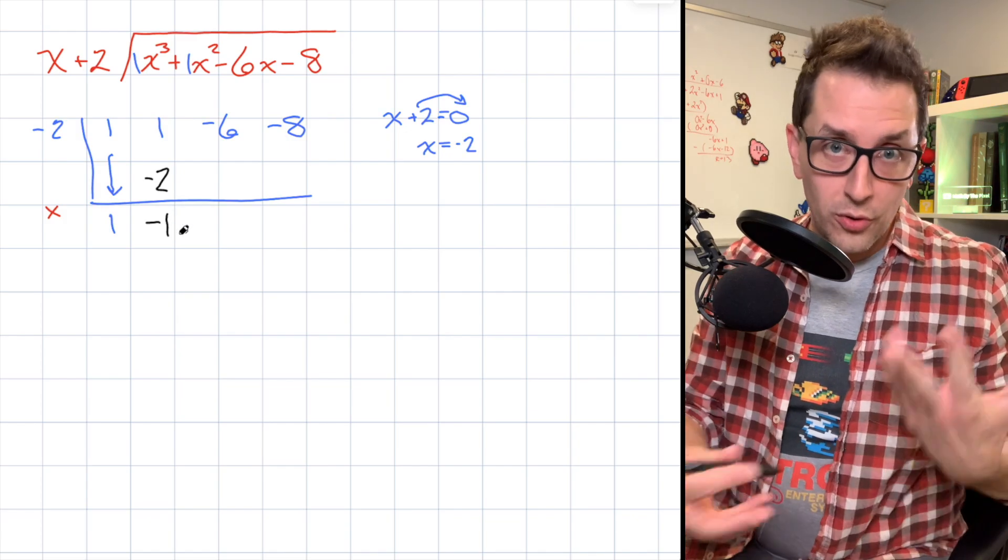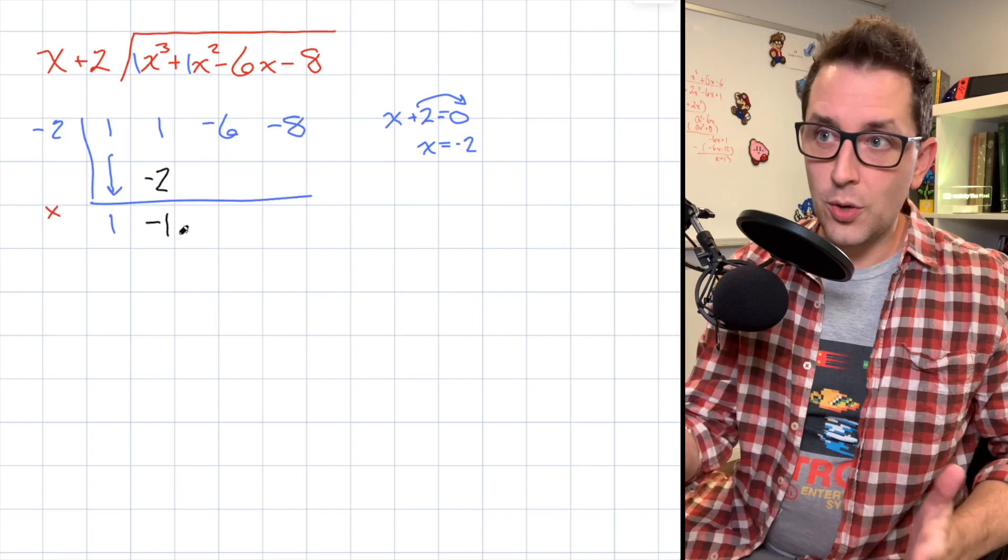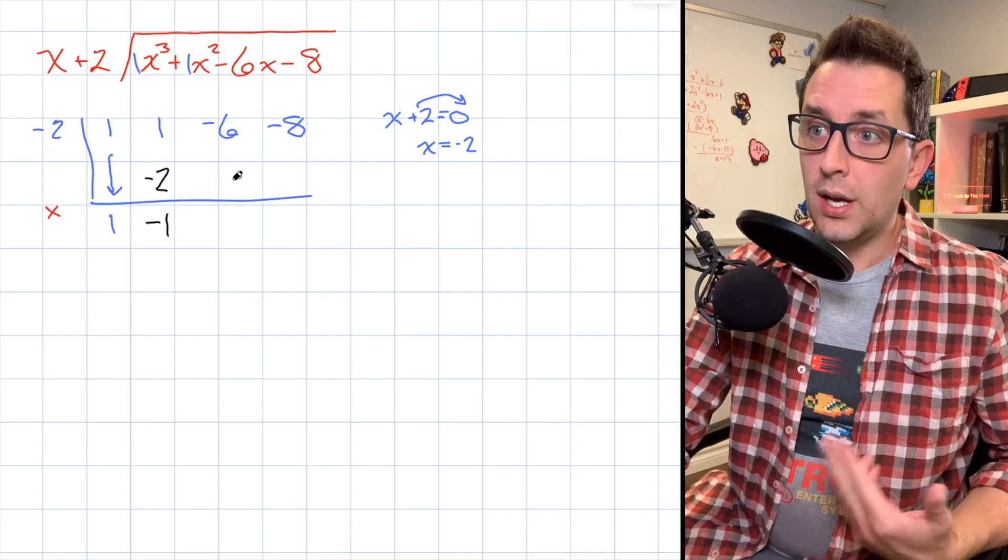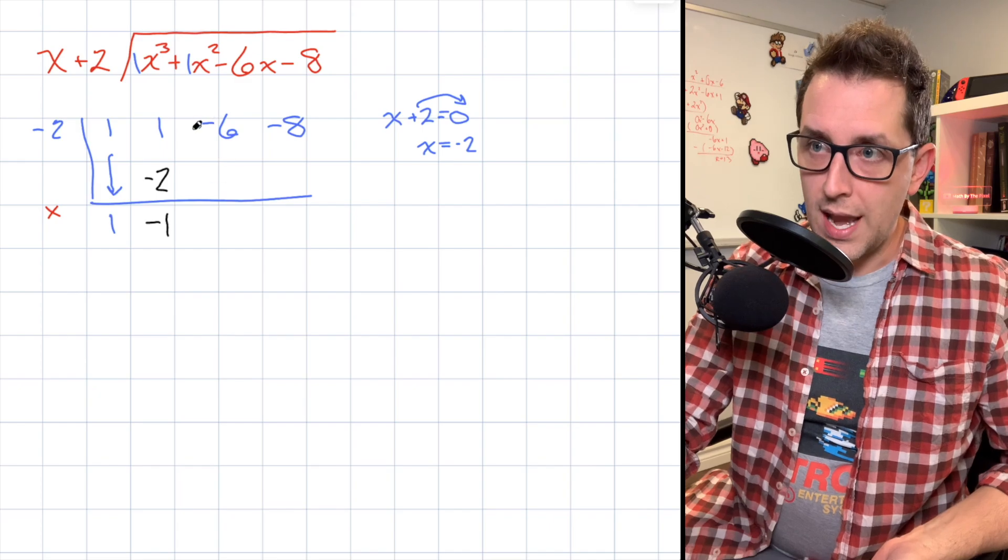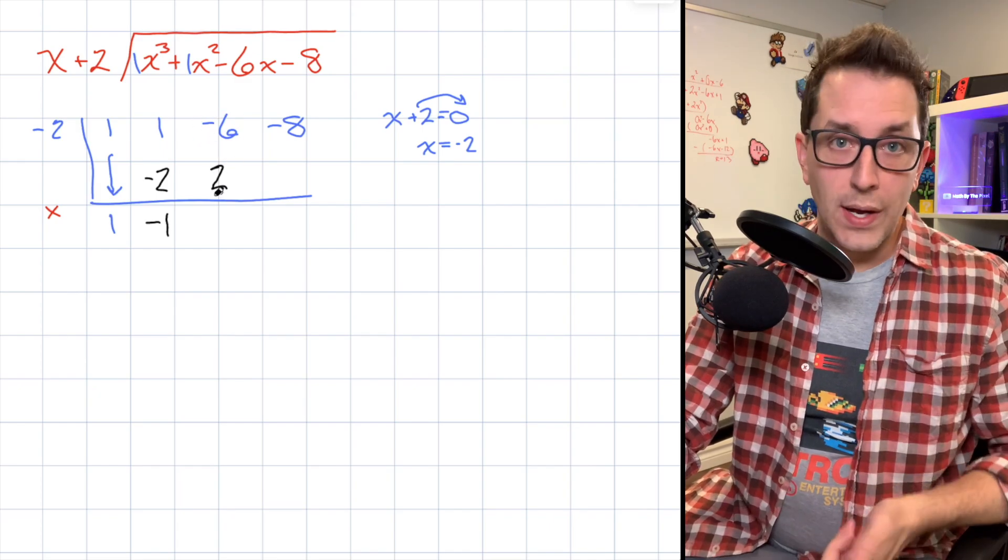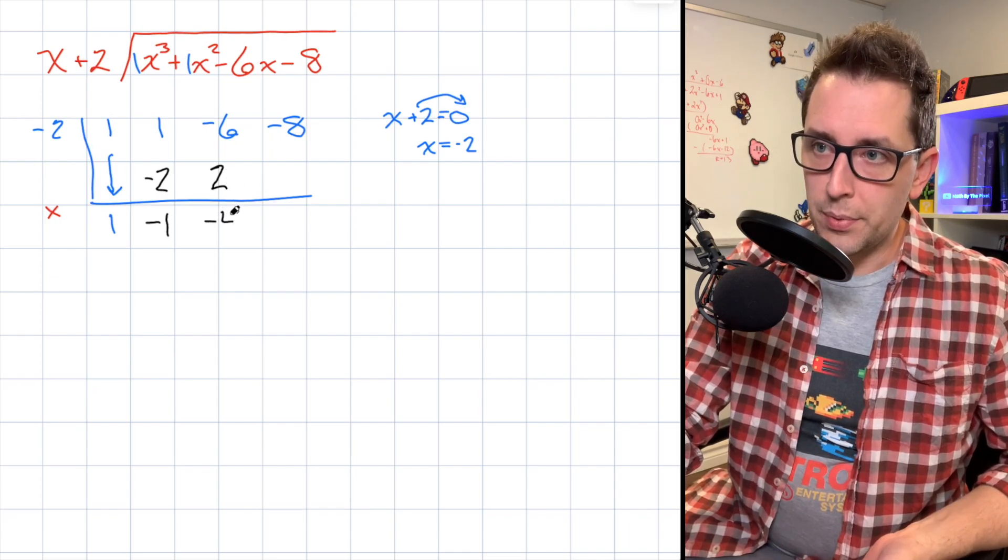Now the beauty of this whole synthetic division process is that's really it. You're just going to repeat that process until you run out of terms. I'm going to take that -1, I'm going to multiply it by -2, I'm going to place the result right here underneath the next coefficient, and in this case, that's going to be 2. And remember, the next step is to just add straight down. So I take -6, I add 2, in this case, I get -4, and I place the result right here.